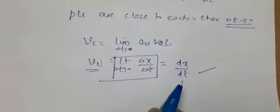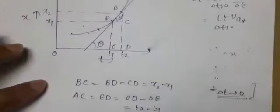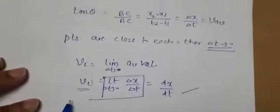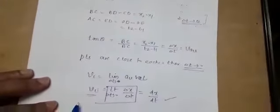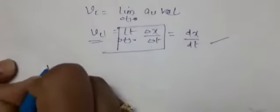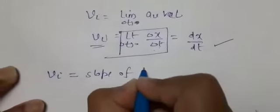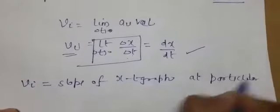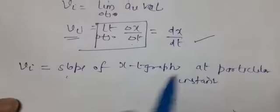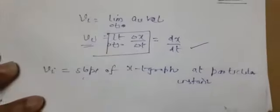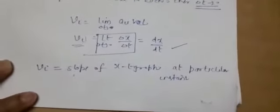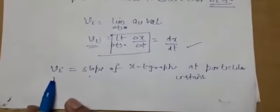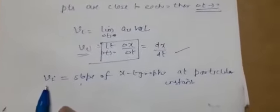A limit is placed on the average velocity expression. Instantaneous velocity is taken as the limiting case of average velocity when Δt tends to 0. As per the basic concept, average velocity is Δx upon Δt, and this becomes instantaneous velocity, represented as dx upon dt. Conclusion: instantaneous velocity equals the slope of the position-time graph at a particular instant — or the slope of the tangent to the position-time graph at that particular instant.